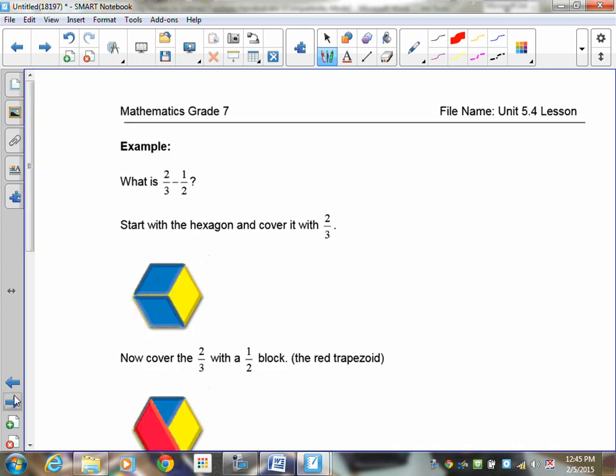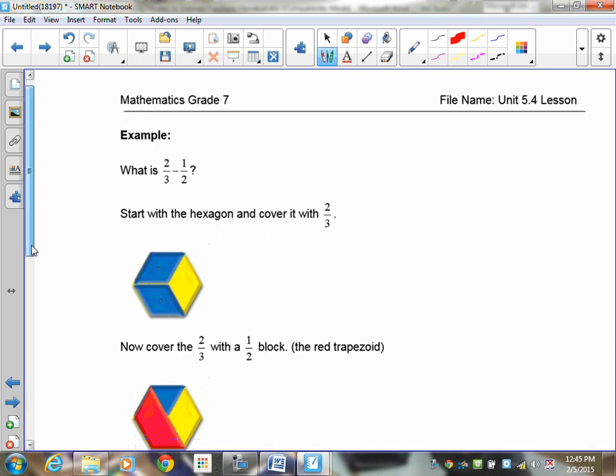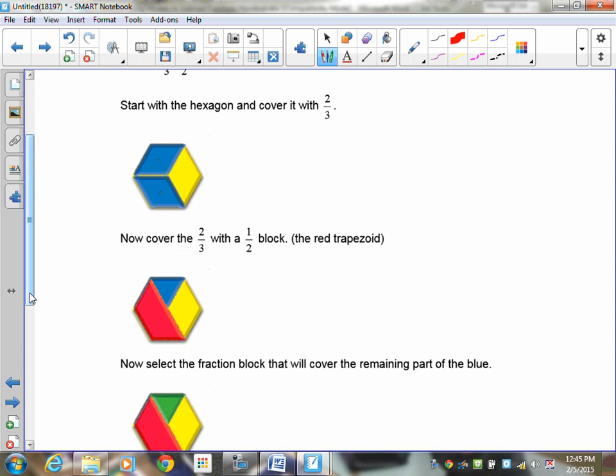And on the next one you'll see another question, 2 thirds take away 1 half. So we start with a hexagon. We cover it with 2 thirds. Now taking 2 thirds, I'm going to cover that with a half block. You'll see I've got the red there covering it. The shape that's left showing right here, that is a green triangle. So we know that 2 thirds take away 1 half is equal to 1 sixth.